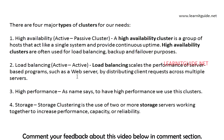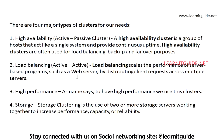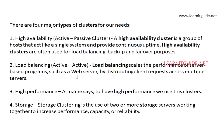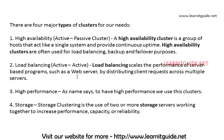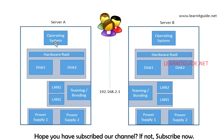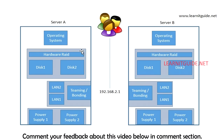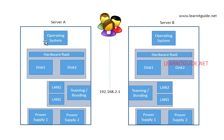Load balancing means active-active clusters. Load balancing scales server performance by distributing client requests across multiple servers. In a two-node load balancing cluster, both nodes are active — both servers are running and all resources such as CPU and memory are being used.